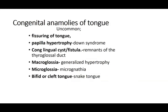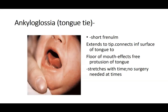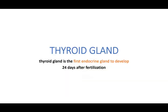Summary of tongue anomalies: fissures, papillary hypertrophy, cysts, macroglossia, microglossia, bifid tongue, and tongue tie. Next is the development of the thyroid gland, also related to the floor of the pharynx. The thyroid gland is said to be the first endocrine gland to develop — 24 days after fertilization.